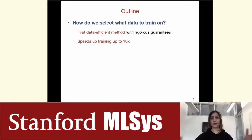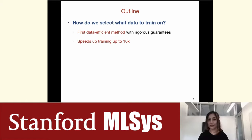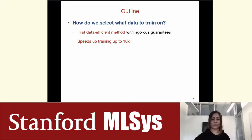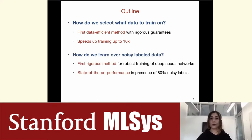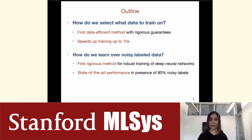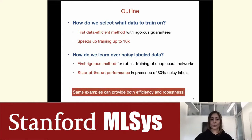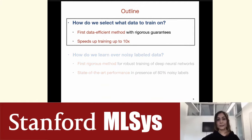My talk has two parts. The first part is about efficiency: how can we find the most essential data points for efficient machine learning? I want to talk about the first efficient machine learning method with worst-case guarantees, and show how it can enable us to speed up training machine learning models by up to 10 times. Then I'll talk about how we can achieve robustness against noisy labels by being selective and selecting a subset of data points, achieving state-of-the-art performance in the presence of 80% noisy labels. Interestingly, the same subset of examples can provide both efficiency and robustness.